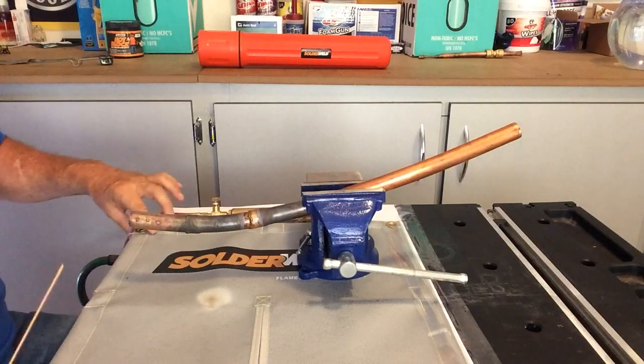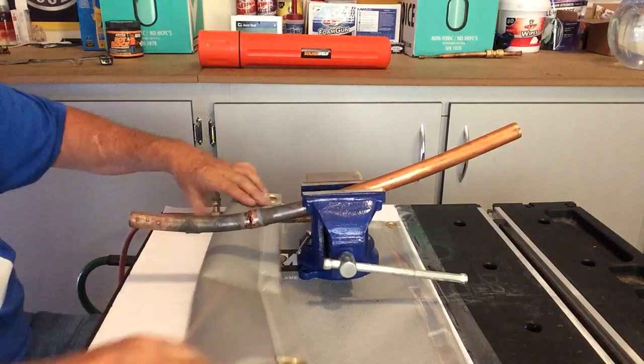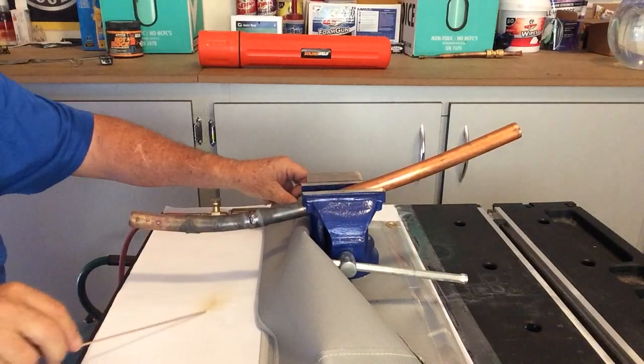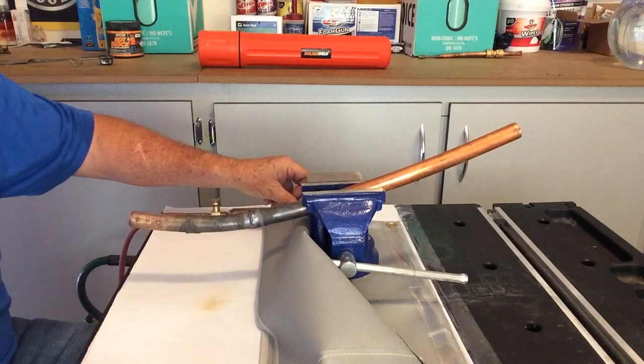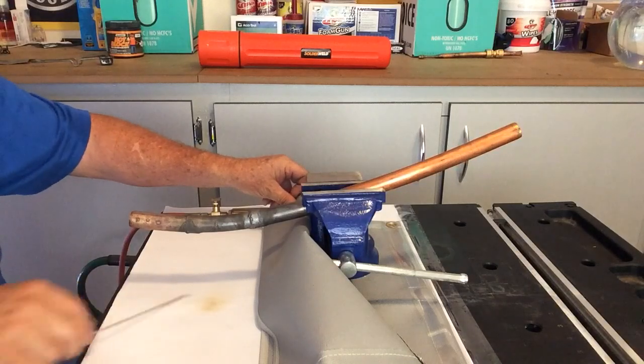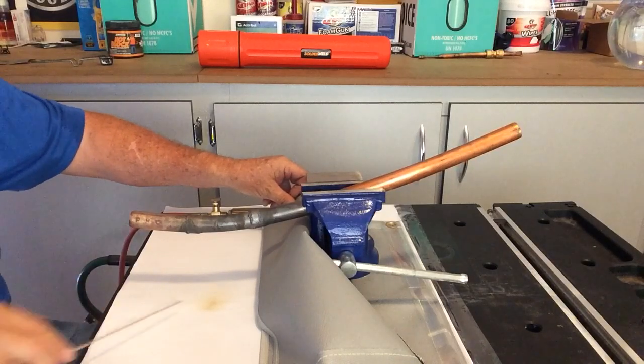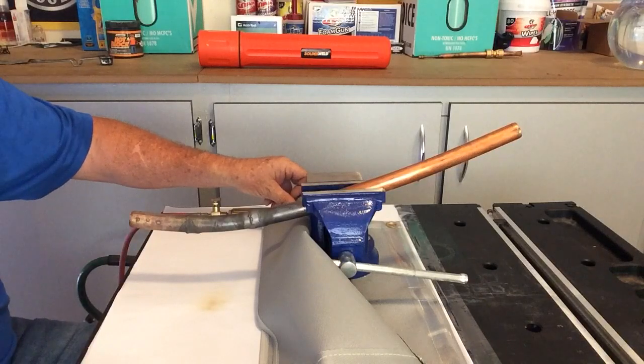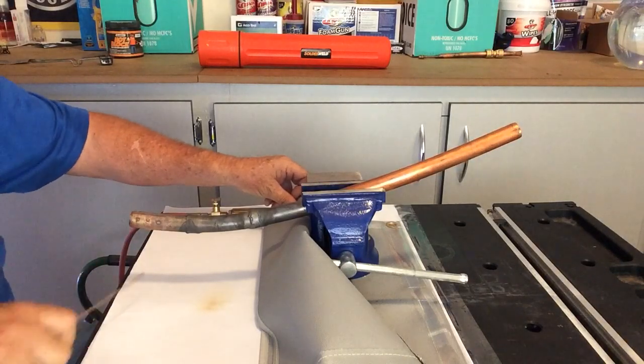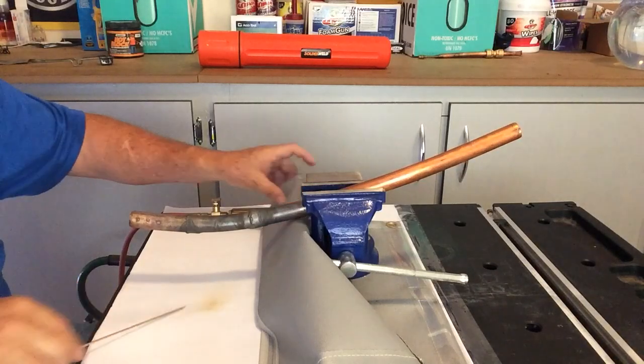A little bit of a brown mark where I actually got the torch too close and into the blanket. But it did not catch fire, and that's the big thing. So if this was actually a metal panel on an AC unit, it would not have done anything to the paint. It just basically got a little bit of a light brown.